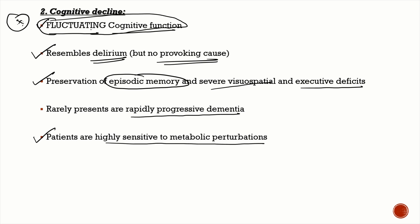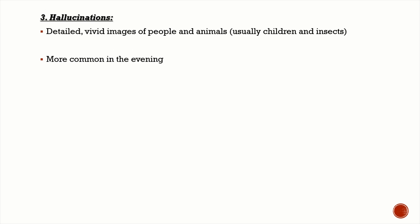Hallucinations in Lewy body dementia are detailed, vivid images of people and animals — usually children and insects — and they are more commonly present in the evening.